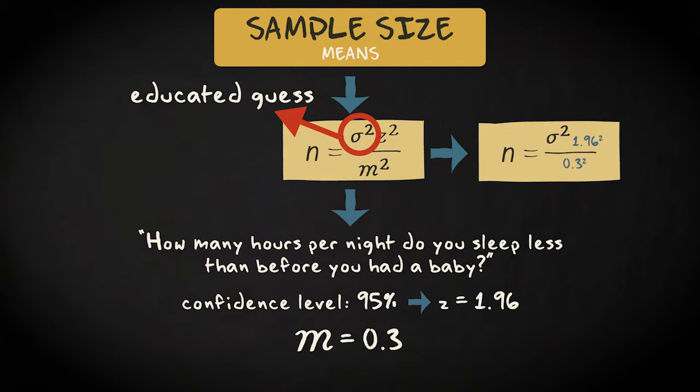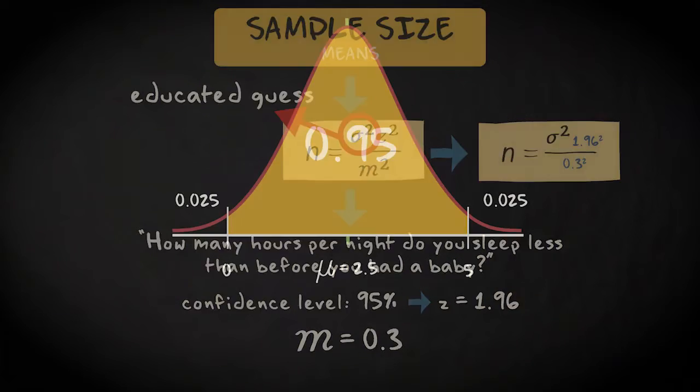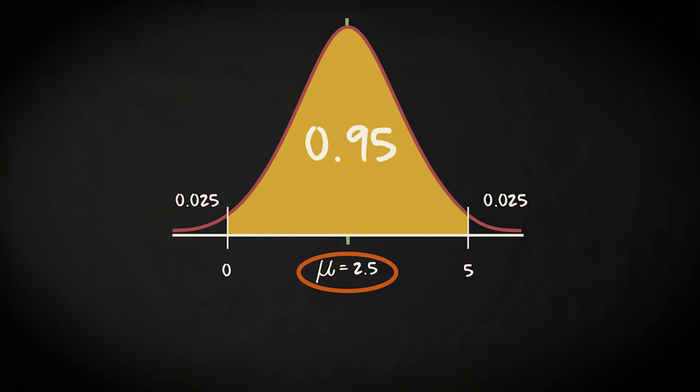I assume that some parents won't sleep less at all, and that some of them will sleep about 5 hours less. Yet, I don't expect many parents to sleep more than they did before they got their first child, and I also don't expect many of them to lose more than 5 hours of sleep. So, if we assume that the variable is normally distributed, and that 95% of the new parents sleep between 0 and 5 hours less, the distribution in the population would look like this. The mean is 2.5 hours, and the standard deviation is 1.25 hours.